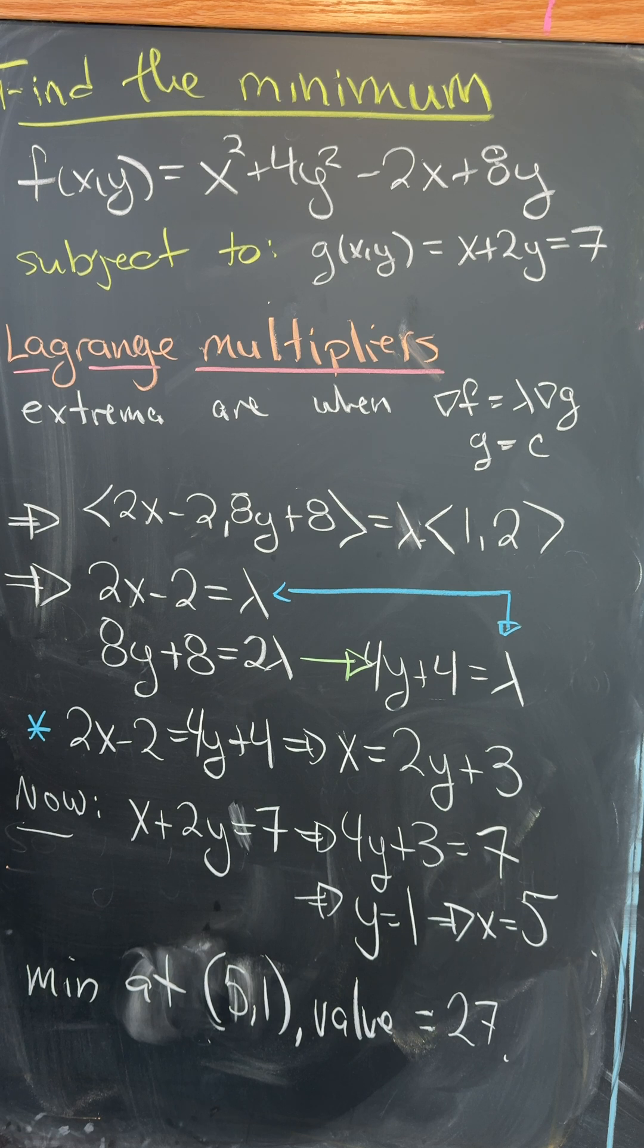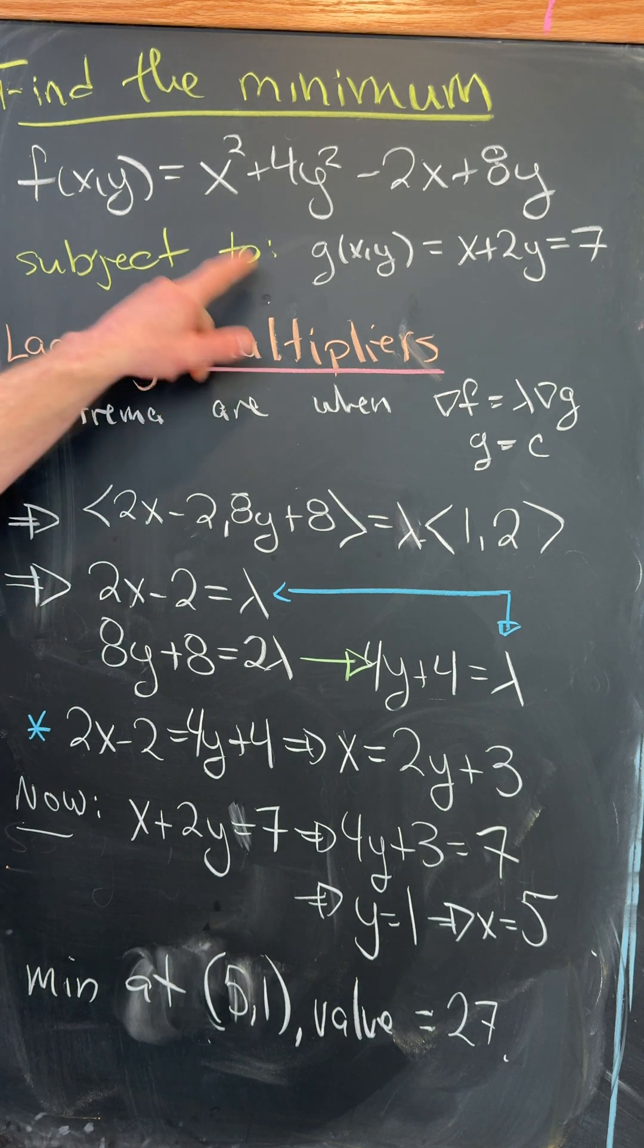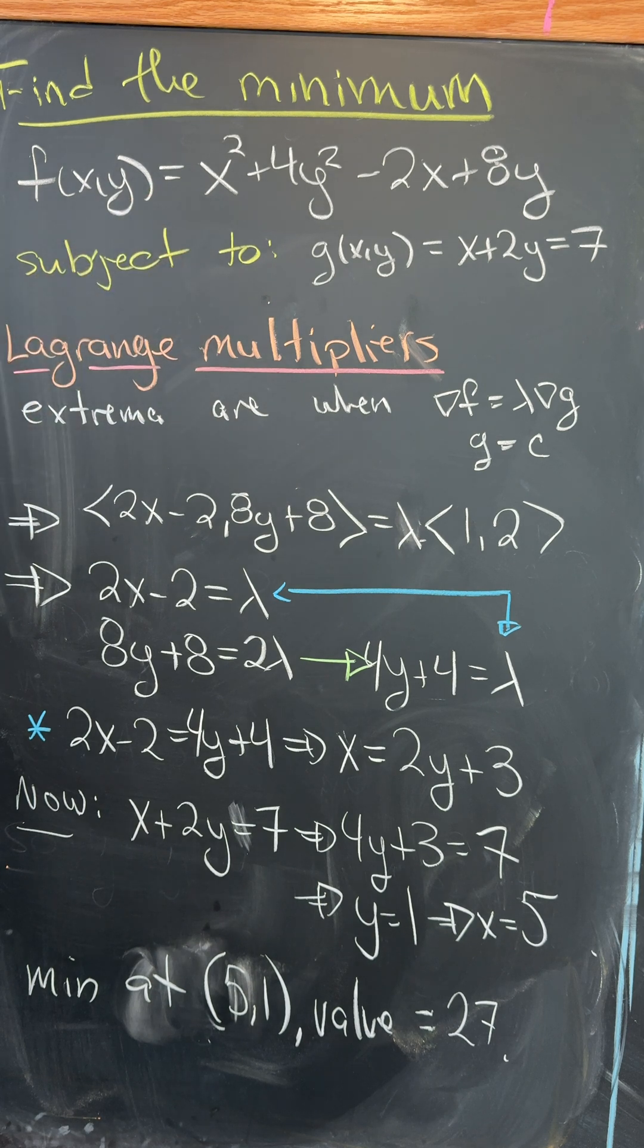Of course here we have to check that we actually have a minimum, and how we do that is just take any other point along our constraint and show that we get a value that's larger than 27.